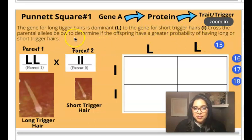Cross the parental alleles below to determine if the offspring have a greater probability of having long or short trigger hairs. So I just want to emphasize the alleles, right? There are different versions of this gene. Again, the different versions of a gene are called alleles. You have capital L, which is dominant for long trigger hairs, versus lowercase l, which is recessive for short trigger hairs.